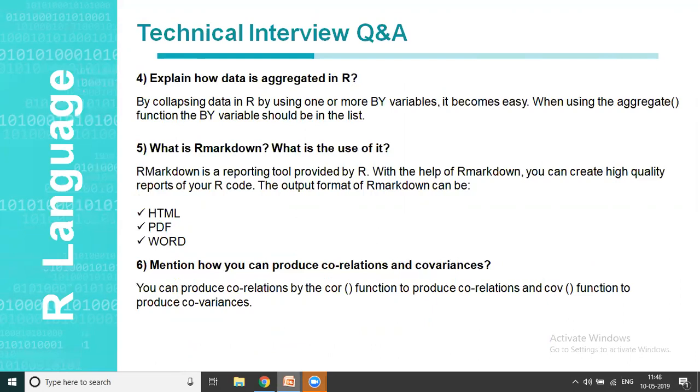The fourth one is, explain how is data aggregated in R? When you want to aggregate data or in other words, you want to collapse data, you can use one or more BY variables. It really becomes easy when you use BY variables. And when using the aggregate function BY, it should be used in a list. Within a list, it cannot be used independently. As long as you're following these two factors, you will see that your data is getting aggregated.